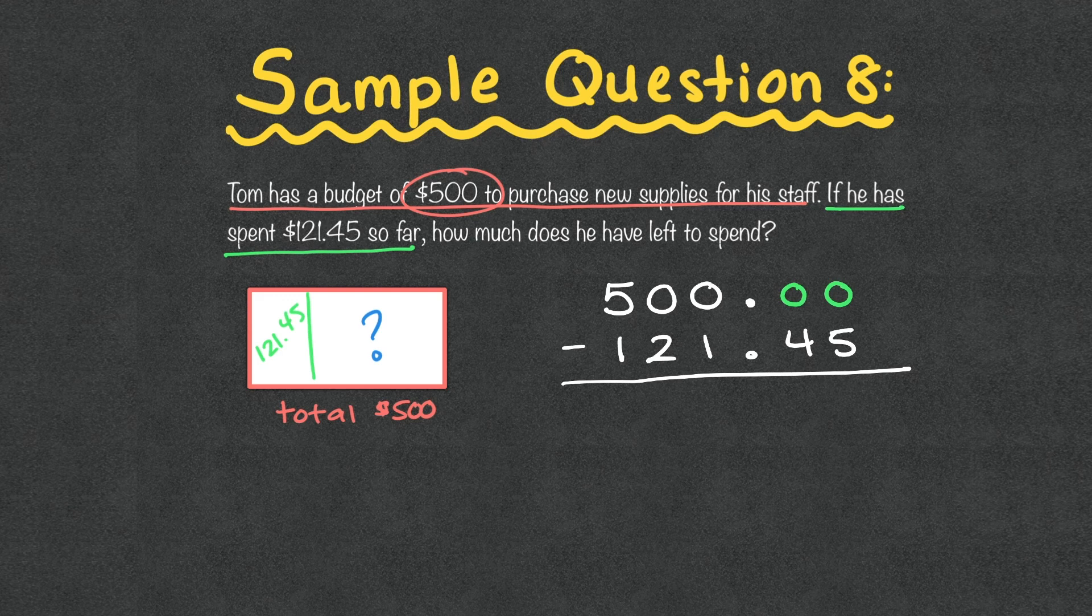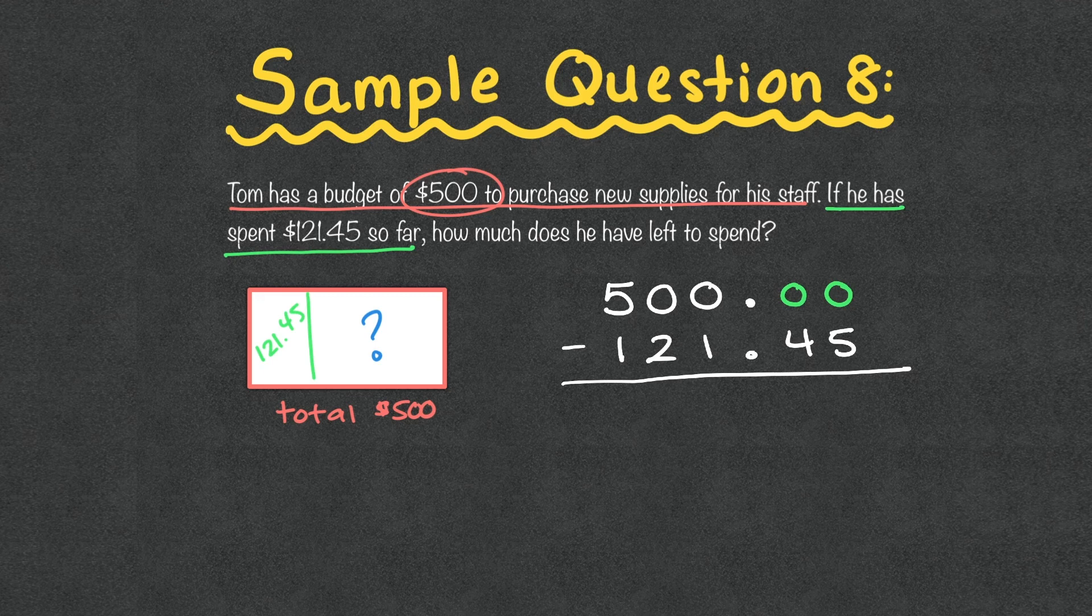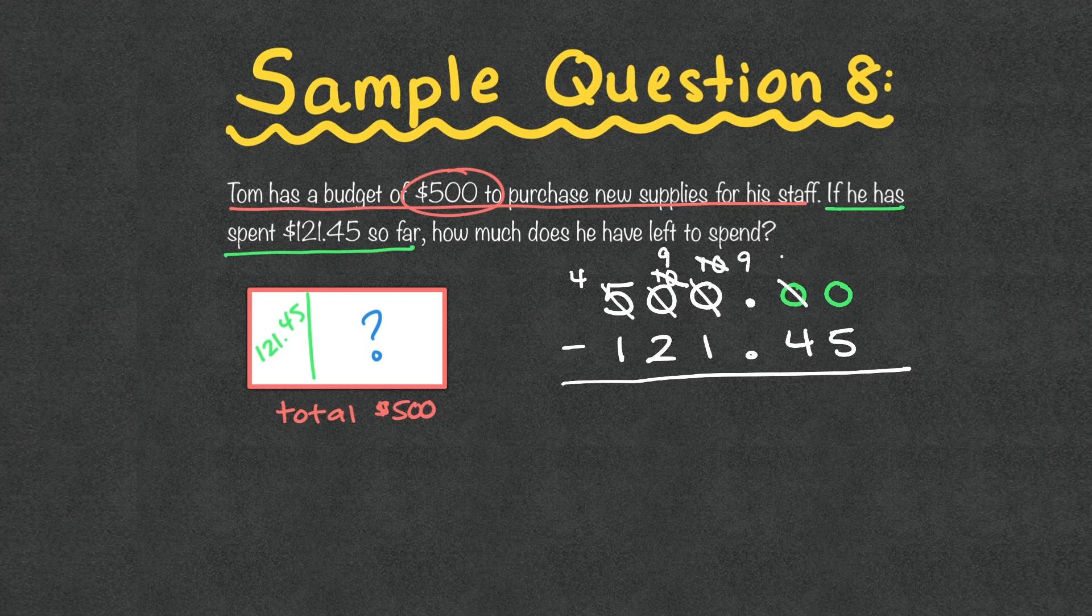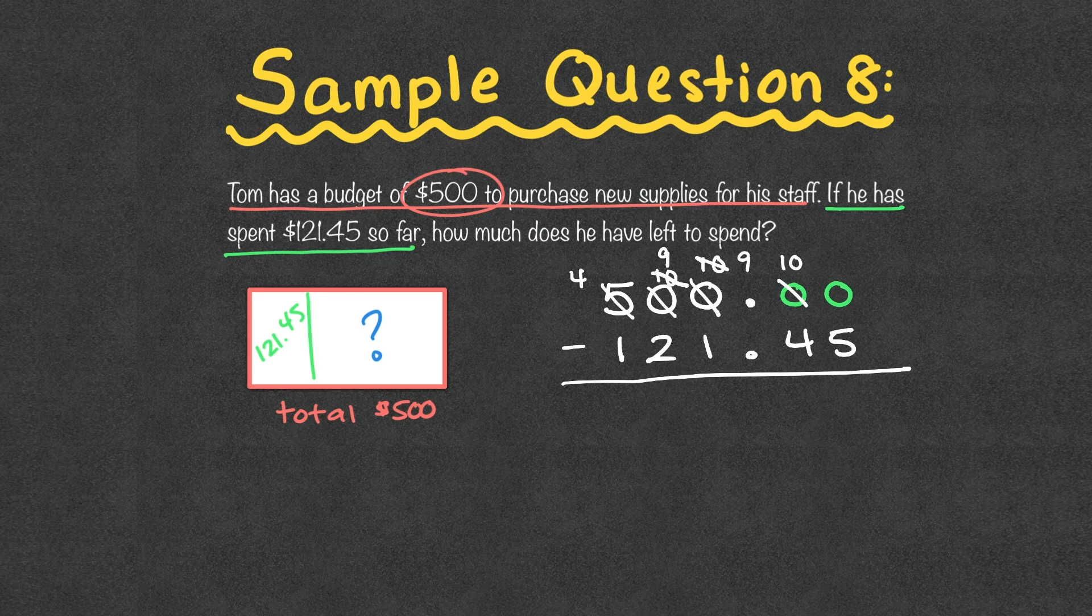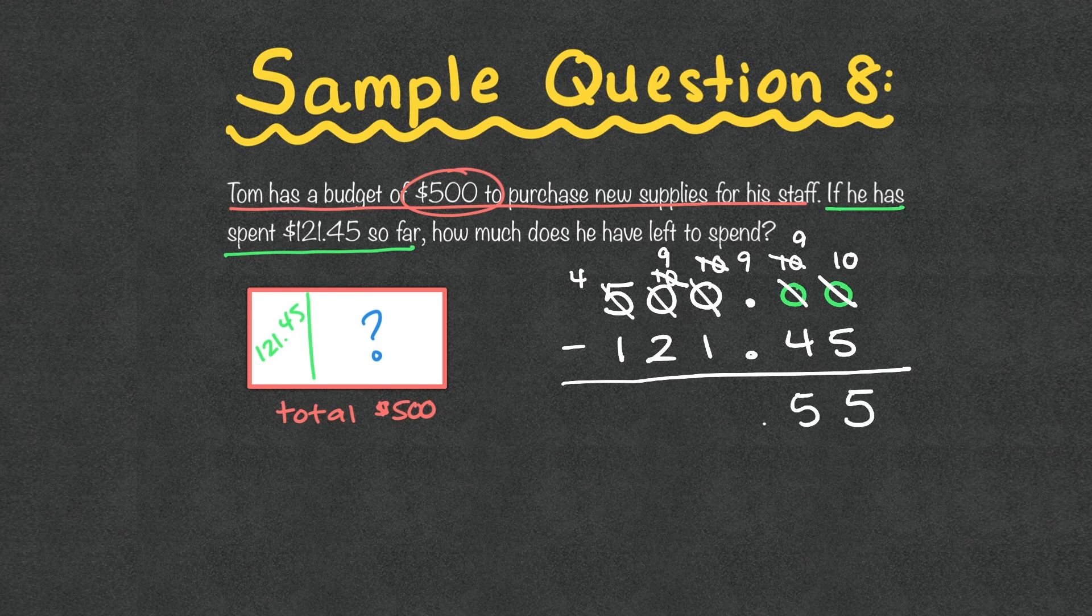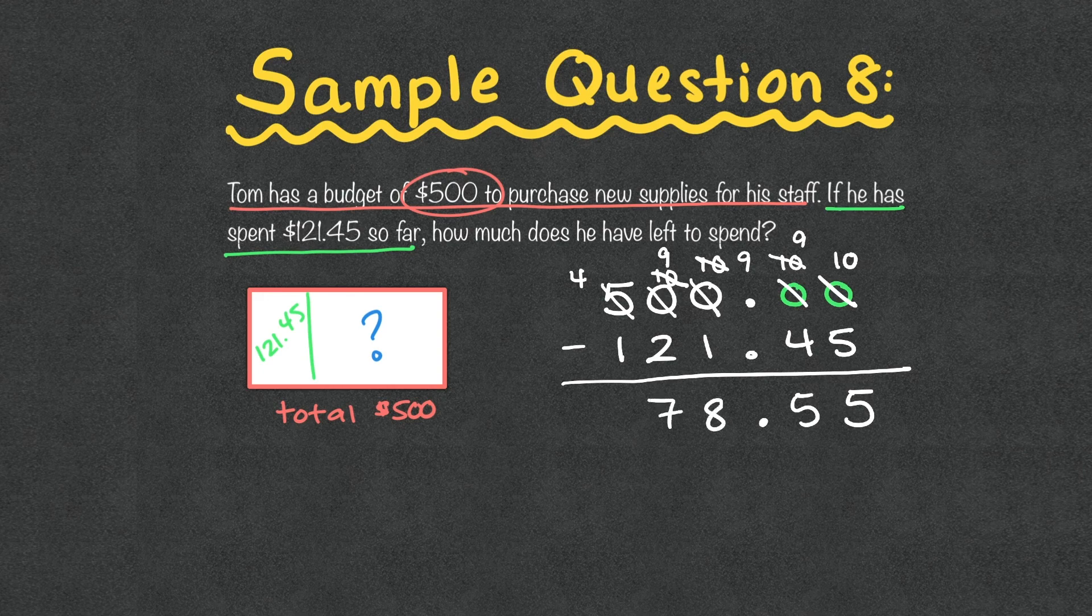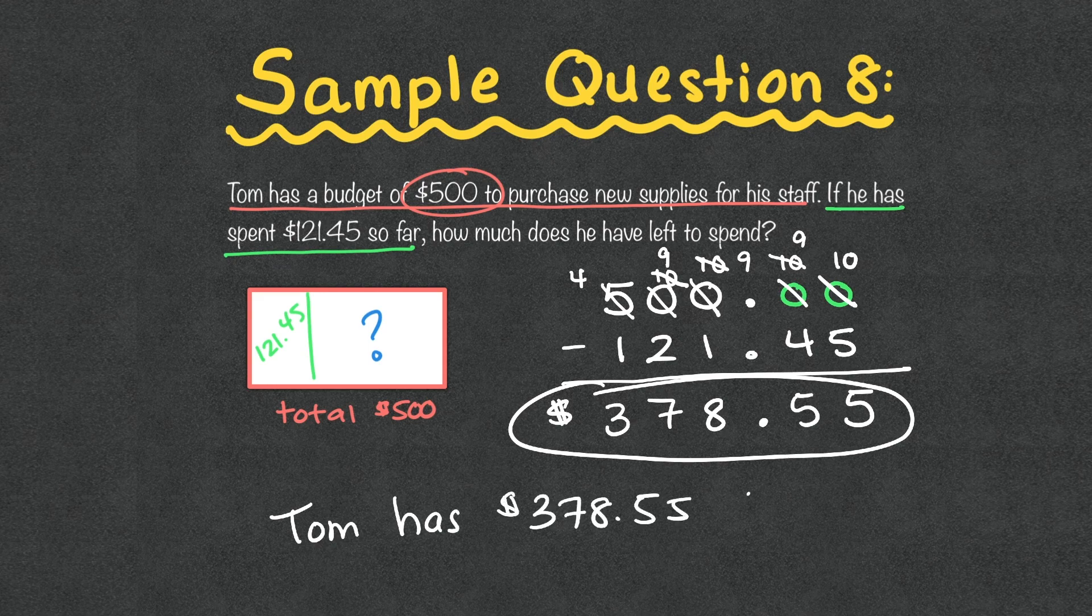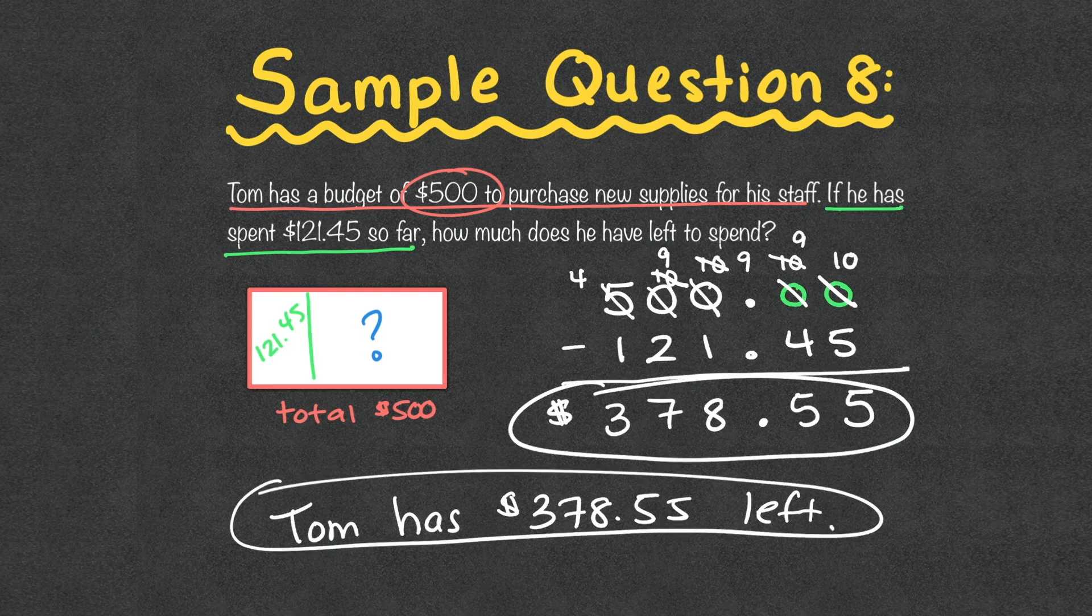So let's get to the subtraction. We start with 0 minus 5. We can't do it. And we know we're full of zeros. So we're going to cross out the 5, make it a 4. That makes this 0 into a 10. And now we can borrow from that one. So that 10 becomes a 9. And our ones place is now 10. Now our ones place becomes a 9. So we can give our tenths place 10. We still can't do 0 minus 5. So we cross out the 10, make it a 9, and make this hundredths place a 10. So now we can subtract. 10 minus 5 is 5. 9 minus 4 is 5. Decimal point. 9 minus 1 is 8. 9 minus 2 is 7. 4 minus 1 is 3. I'm going to include my dollar sign in front. So Tom has $378.55 left. That becomes our final answer.